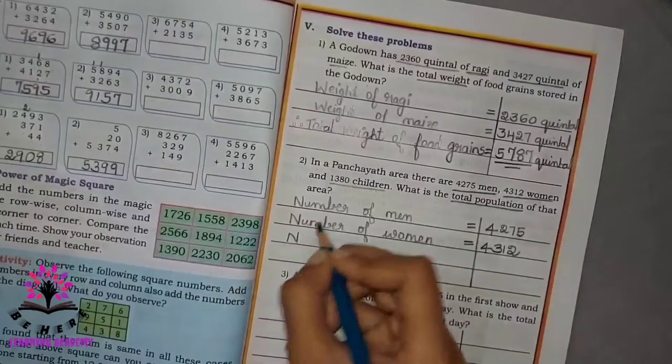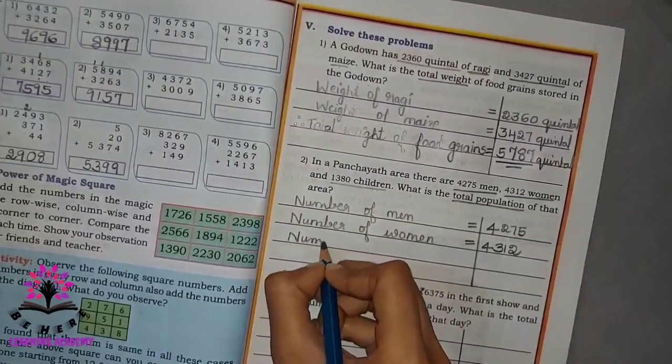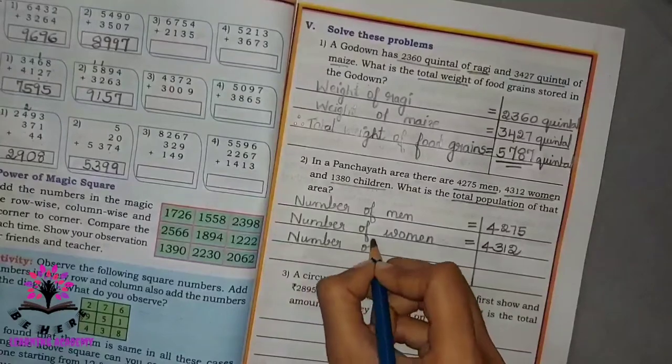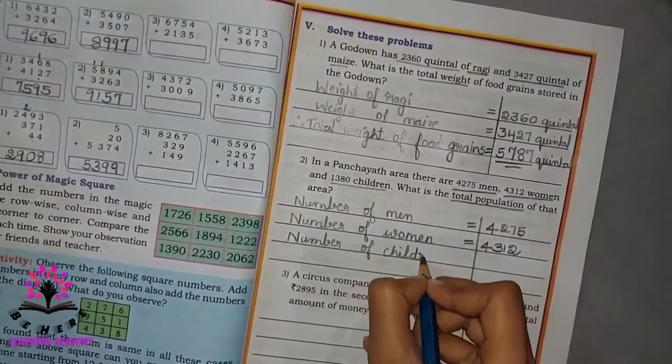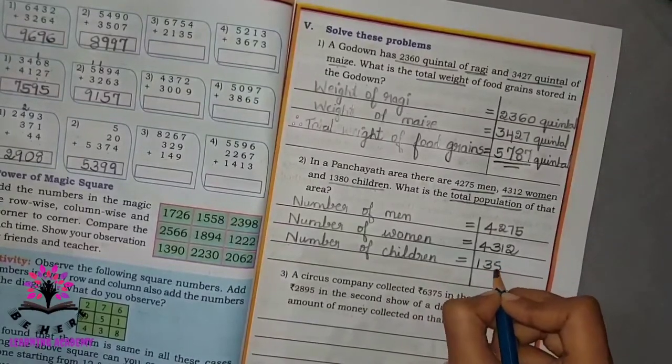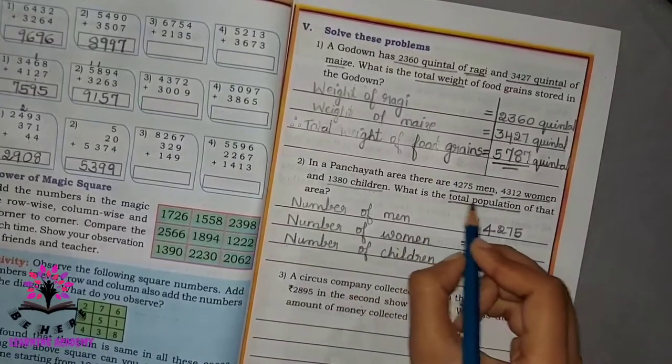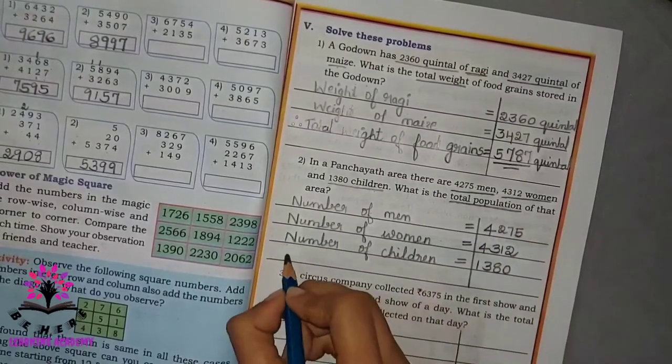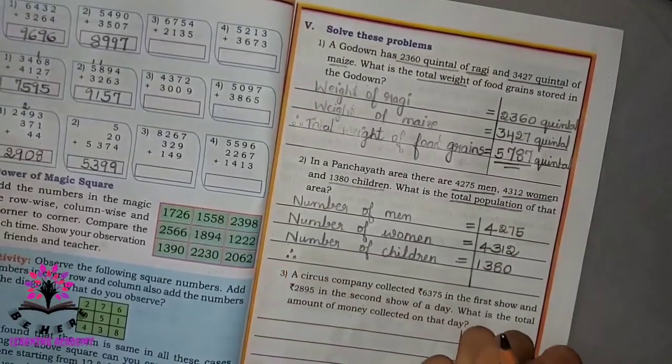Number of children is equal to 1,380. Therefore, represented by three dots...